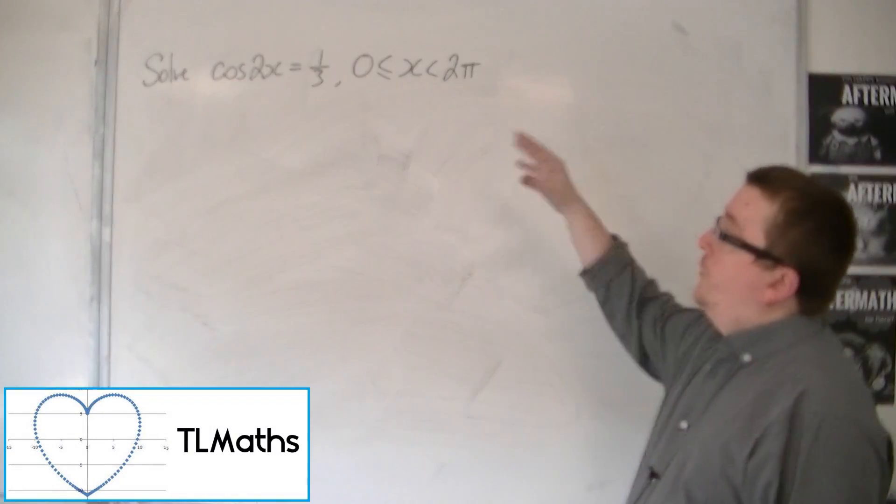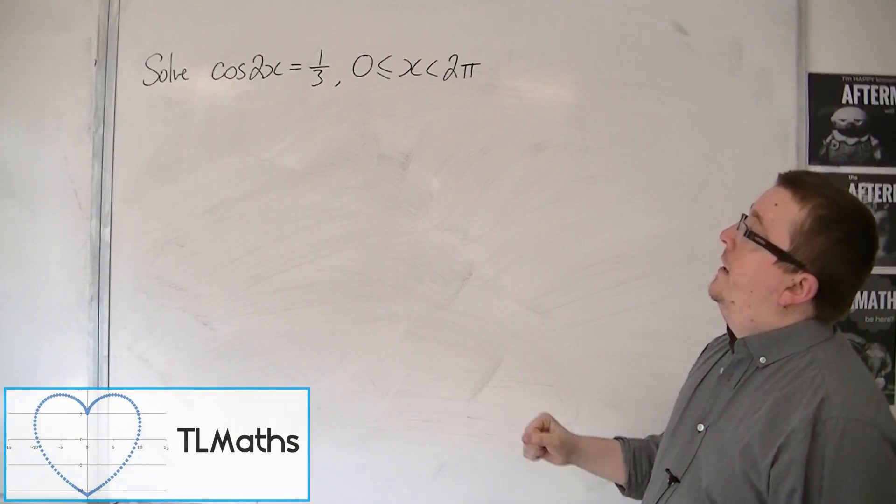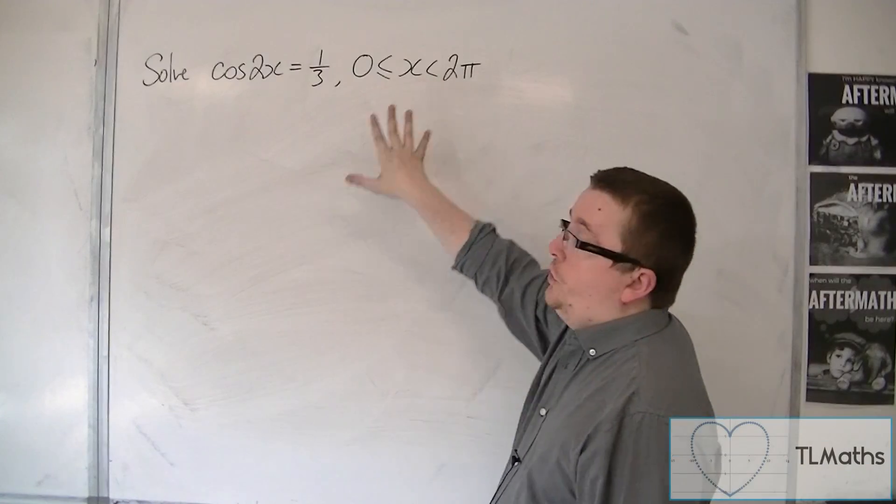Let's say I want to solve cos of 2x is equal to 1 third, and this time we're working between 0 and 2 pi radians.